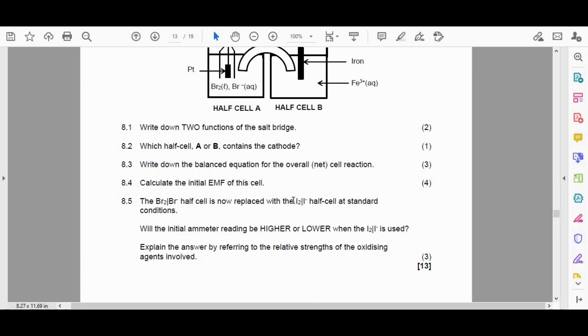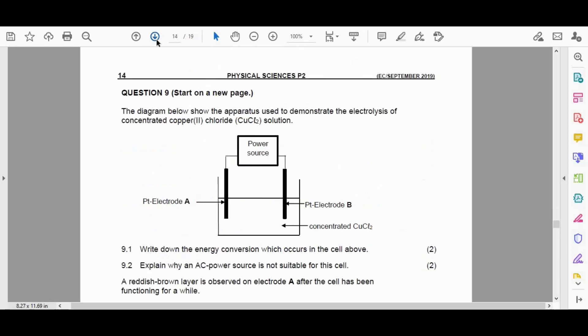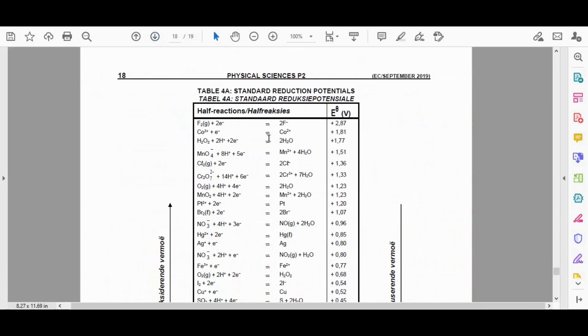Okay. So now we have to look at the half reaction and the half cell EMF value to compare these two. We know that this was positive 1.07. That's why I like using table 4a. So we go to table 4a.